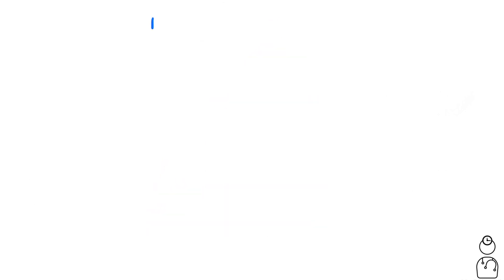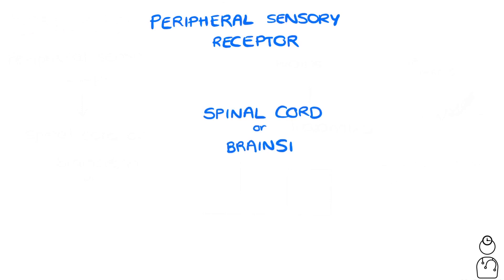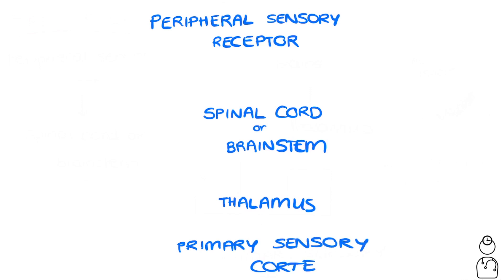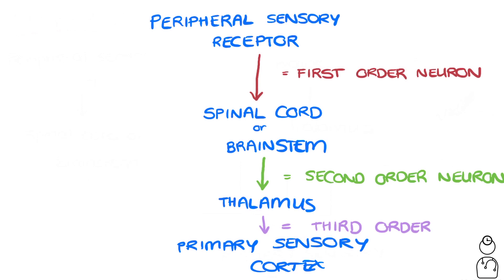Now let's talk about the order of the nerves in the ascending tracts. The ascending tracts we're going to talk about have first, second, and third order neurons. Sensory receptors out in the peripheries need to relay information to either the spinal cord or the brain stem. From there, the information needs to pass to a part of the brain called the thalamus. Finally, the thalamus passes on the information to the primary sensory cortex of the brain. The nerve relaying information from the peripheral sensory receptor to the spinal cord or brain stem is the first order neuron. The nerve carrying information from the spinal cord and brain stem to the thalamus is the second order neuron. And the nerve carrying information from the thalamus to the primary sensory cortex is the third order neuron.